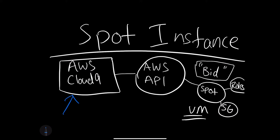If you wanted to programmatically, you could go through here and launch a Spot instance using the AWS API, or you also could separately in the AWS console go through and launch a Spot instance.